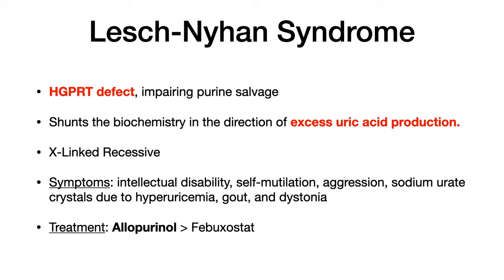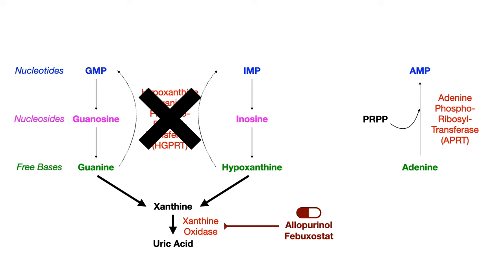The treatment for Lesch-Nyhan syndrome is allopurinol. If you can't use allopurinol, then you would choose febuxostat on the exam. The reason these are the treatments is because both allopurinol and febuxostat inhibit the enzyme xanthine oxidase, which converts xanthine into uric acid. So in the case of Lesch-Nyhan syndrome, if the HGPRT enzyme is knocked out and biochemistry is shunting toward xanthine, inhibiting the enzyme that converts it into uric acid prevents the buildup responsible for the debilitating symptoms.